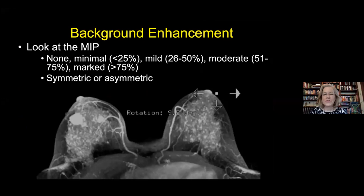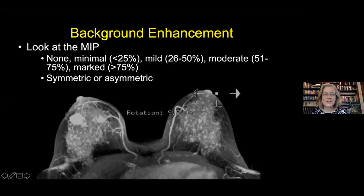For MRI, since we're giving contrast and looking at uptake over time, we want to comment on background parenchymal enhancement. Looking at the maximum intensity projection is the easiest way to get a sense of whether somebody has very minimal contrast uptake in background tissue or very marked uptake—as in this case, where there's a lot of uptake in the breast tissue on both sides. You want to comment not just on the amount of uptake but also whether it's symmetric or asymmetric.